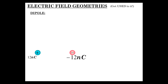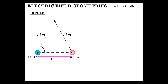We have two charges, plus and minus. In a dipole you have equal and opposite charges. They're spread apart by 10 centimeters, and each of these charges of 12 nanocoulombs are 13 centimeters from point P. We're going to figure out the electric field at point P. This is pretty simple because we just have two charges producing electric fields and we do the vector sum.